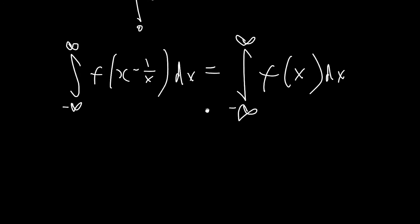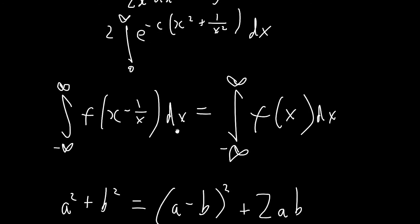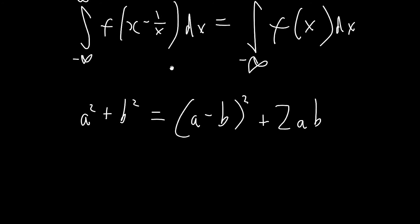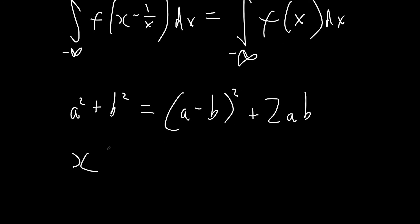So there's this identity from algebra: a squared plus b squared equals (a minus b) squared plus 2ab. If we use this with a being x and b being 1 over x, we get x squared plus 1 over x squared equals (x minus 1 over x) all squared plus 2.